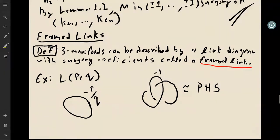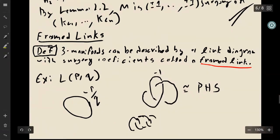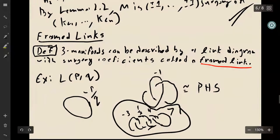This is what framed links are: you draw a link and put surgery coefficients next to each component. For example, you can have a link of four knots with labels -3, 1/2, 4, and 7 — this describes some three-manifold.